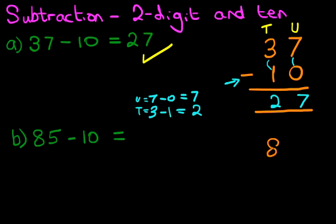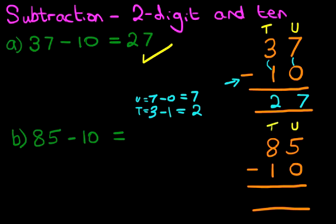We've got 85 minus 10. Now, again, notice how we've written the numbers in nice, neat columns. That is the key to doing these questions. And we're going to label the columns again. We've got on the right-hand side the units column. The one next to it is the tens column. So, we are now ready to go ahead and do the calculations.